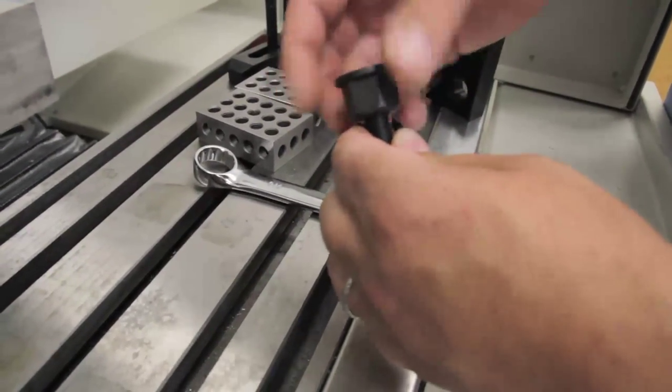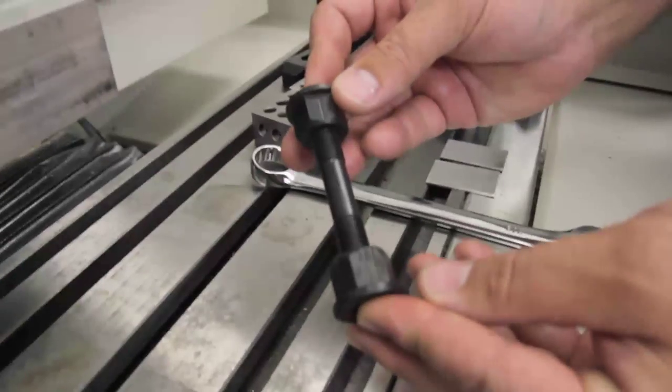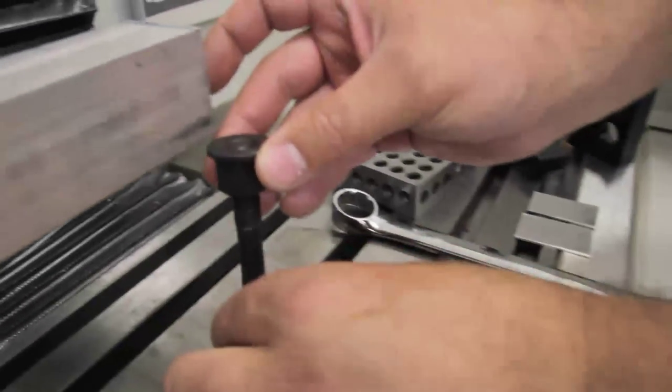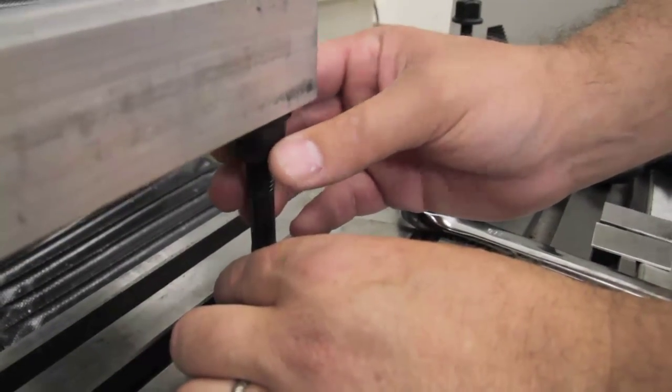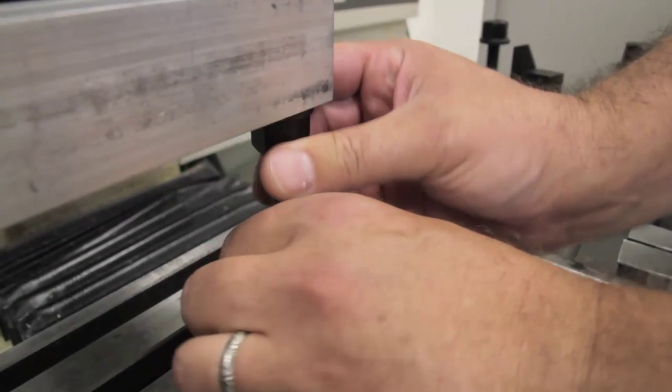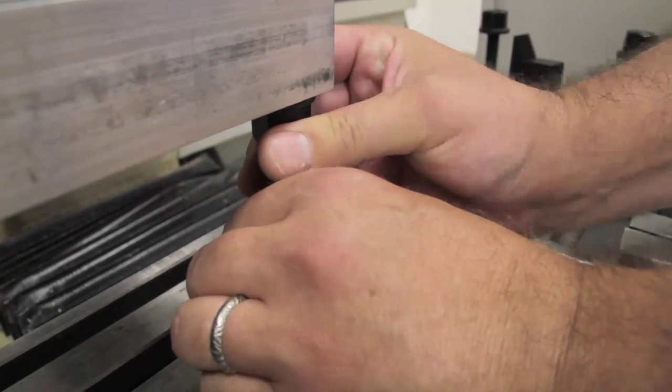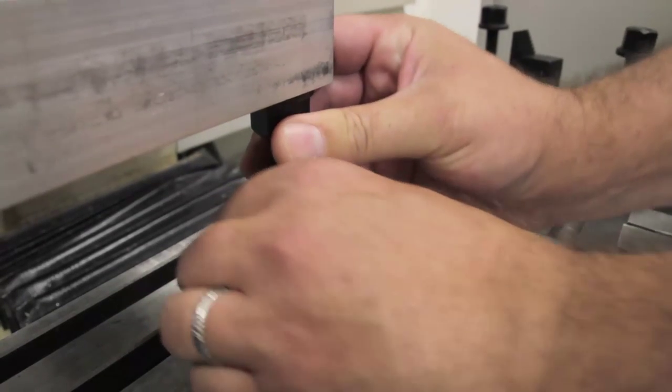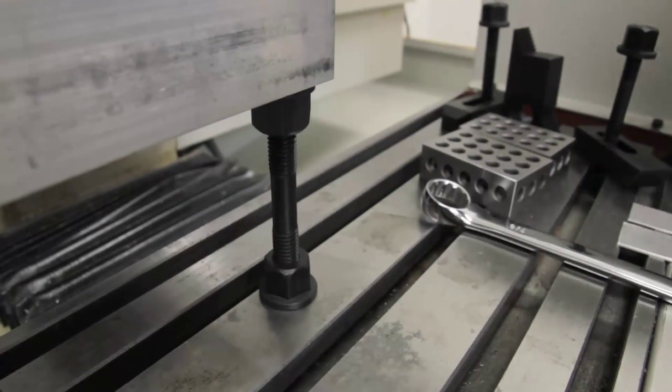So what do you have there? A nut on either end of a stud. And then you just tighten it against the table and the bottom of your work piece. And that is supported for down pressure.